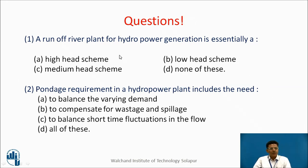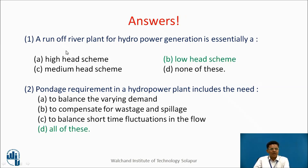Let us take a few questions. A runoff river plant for hydropower generation is essentially: a head scheme, a low head scheme, a medium head scheme, or none of these? Second question: pondage requirement in a hydropower plant includes — the need to balance the varying demand, to compensate for wastage and spillage, to balance short-term fluctuations in the flow, or all of these? Answers: a runoff river plant is essentially a low head scheme. Pondage requirement includes balancing the varying demand, compensating for wastage and spillage, and balancing short-term fluctuations in flow.